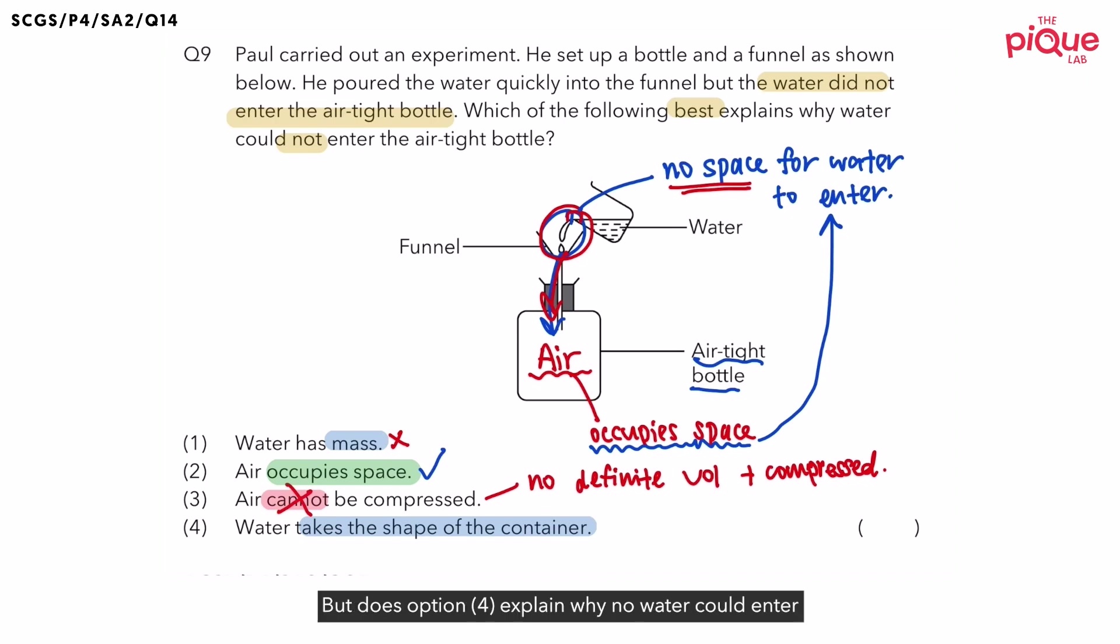But does option four explain why no water could enter the airtight bottle? No. Remember, the reason why there's no water that can enter the airtight bottle is because there is no more space for the water to enter. So with that, option four does not explain the observation. With this, we can finalize that option two is the correct answer.